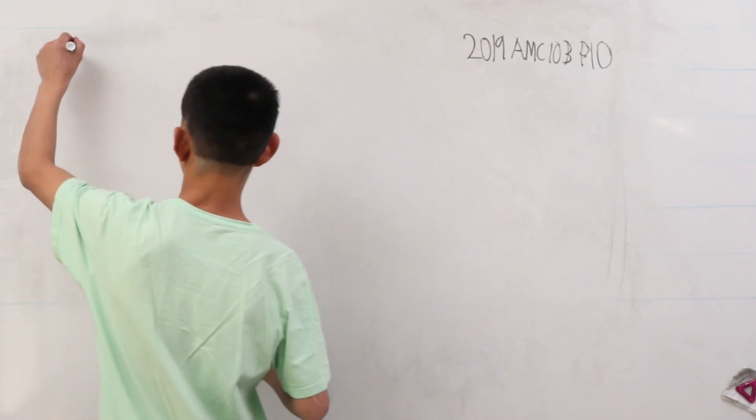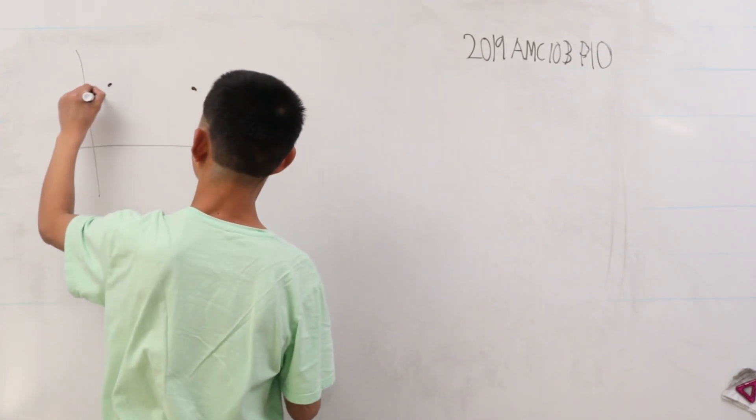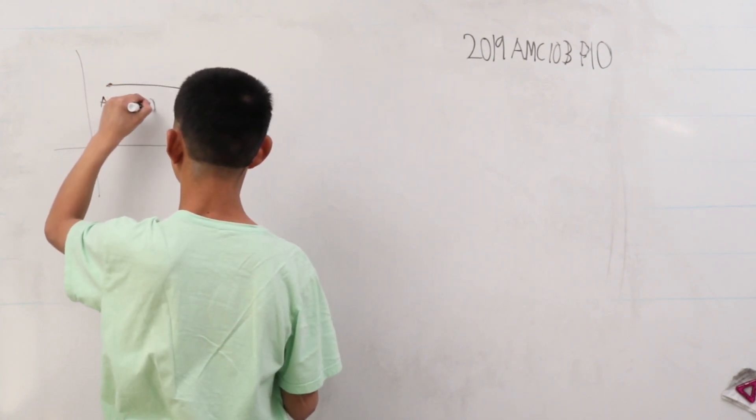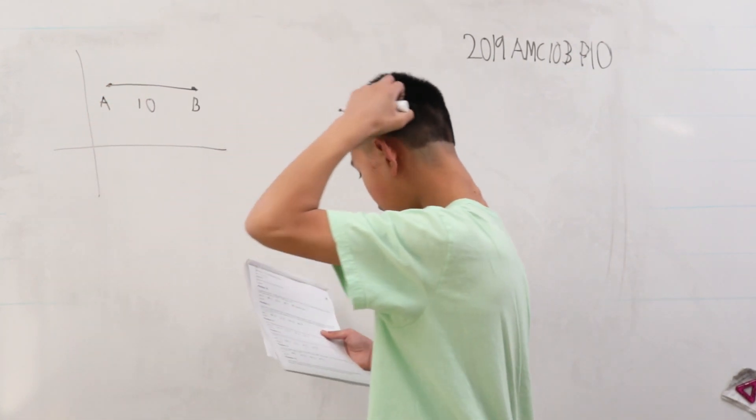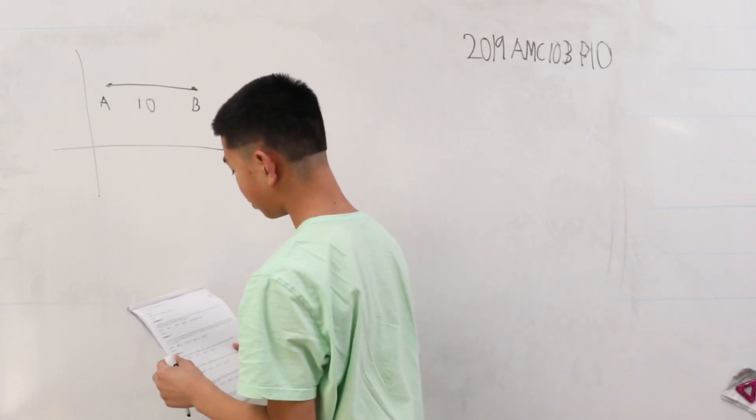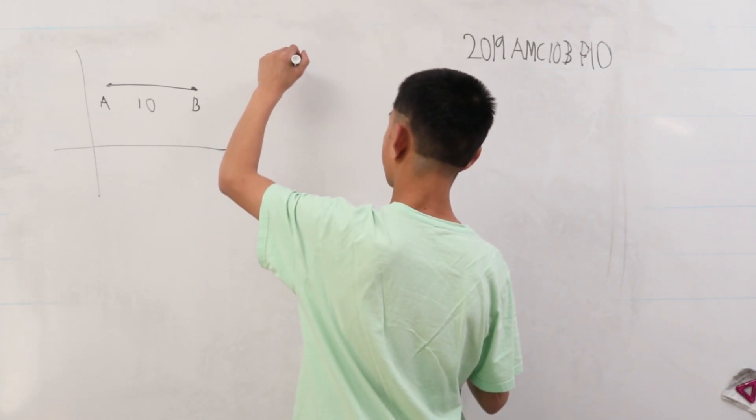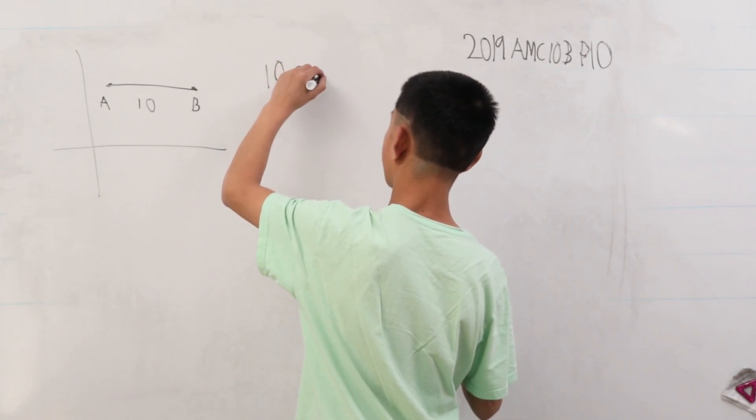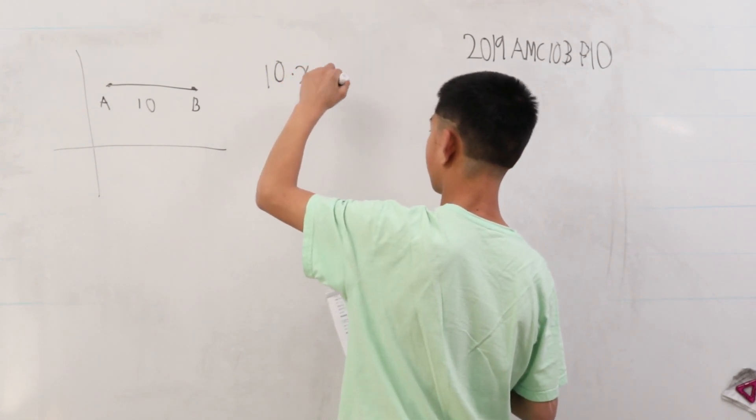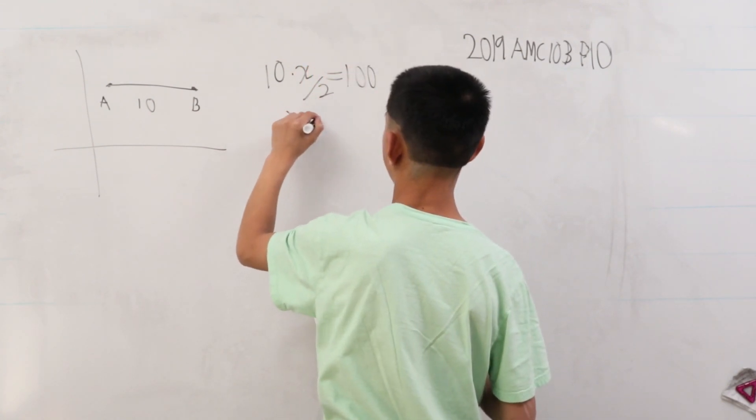Now let's just draw out a plane. And we have points A and B as a line. This is 10 units. And let's just not draw C first. In order for this triangle to be possible, let's just consider the area. This has got to be 10 times some x over 2, where this x, well this is 100, x is equal to 20.